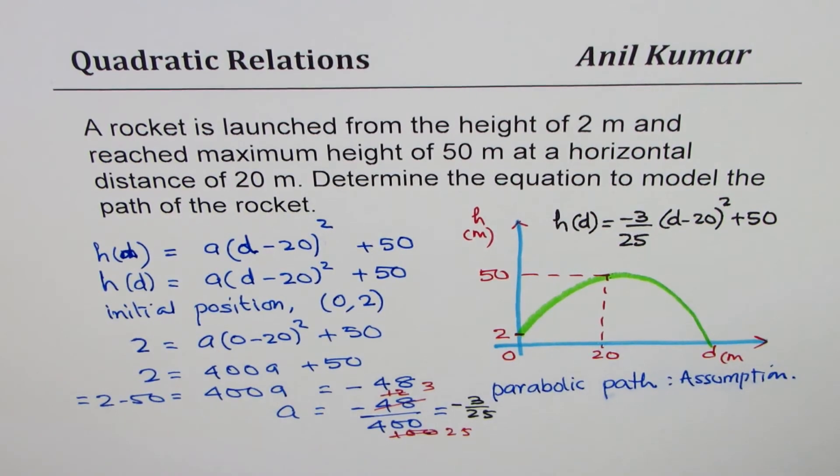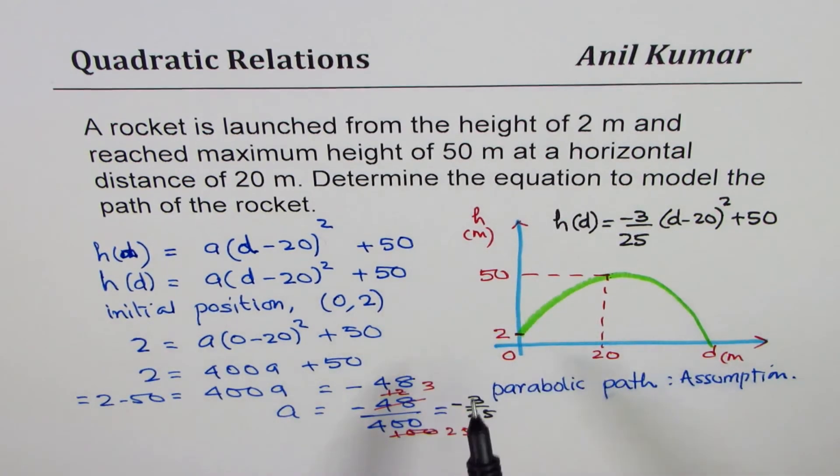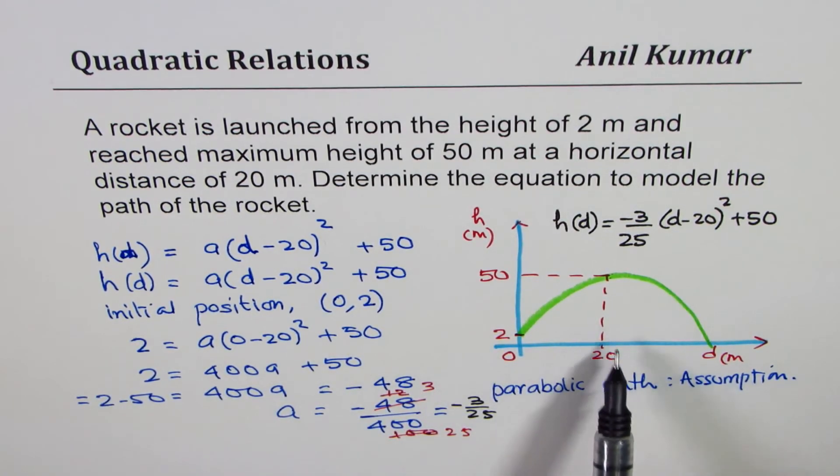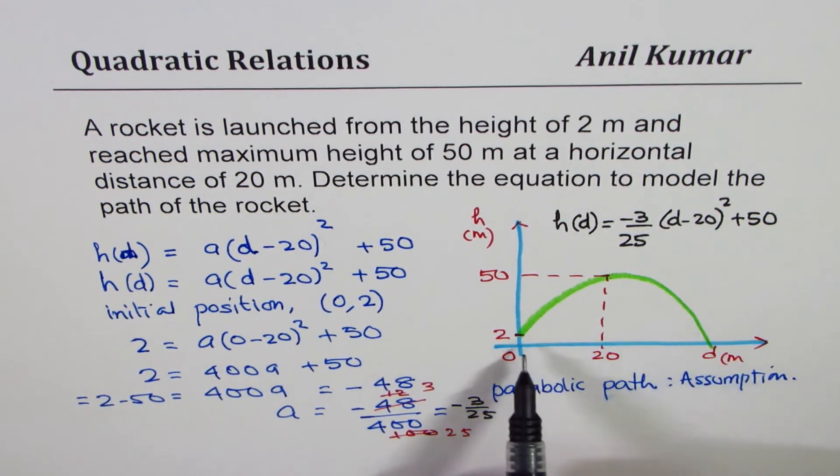That becomes the function which represents height of this rocket when launched from a height of 2 meters with maximum at a distance of 20, maximum of 50 meters.